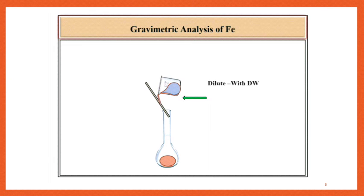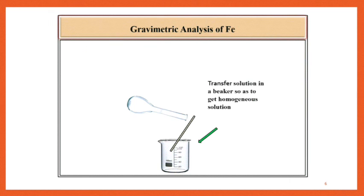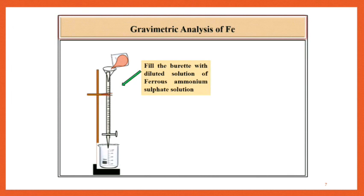Dilute this solution by using distilled water up to the mark and now transfer this diluted solution in a clean and dry beaker to get the homogenous solution. Then fill the burette with this diluted solution of Ferrous ammonium sulphate.